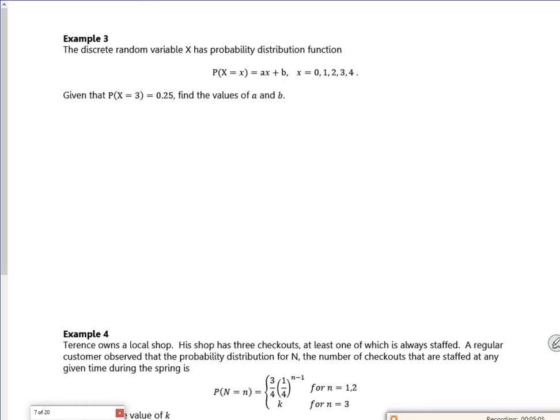Example 3. A discrete random variable X has probability distribution P(X = x) = ax + b for x = 0, 1, 2, 3, 4. Given that P(X = 3) = 0.25, find the values. So if I use that, I know that a lots of 3 plus b is 0.25. So 3a + b = 0.25.